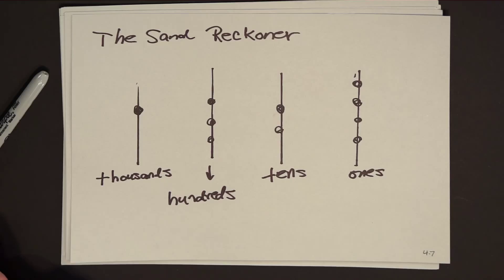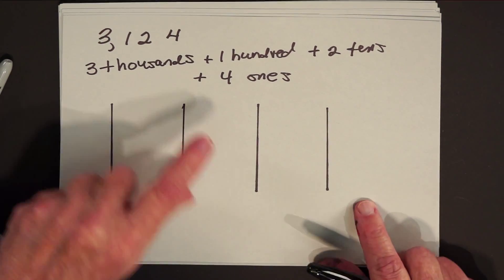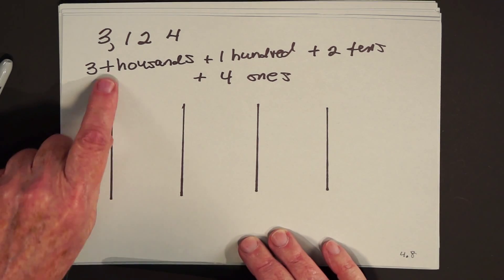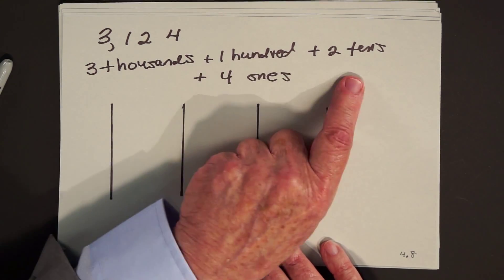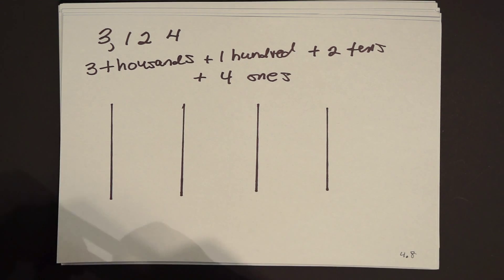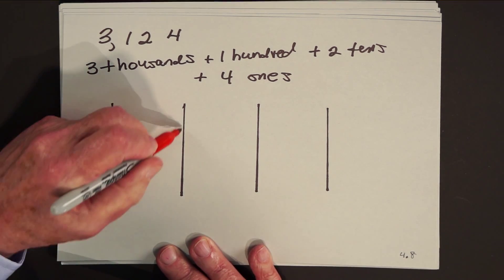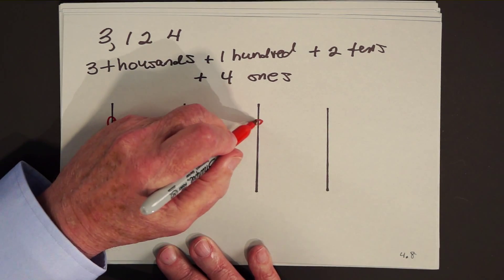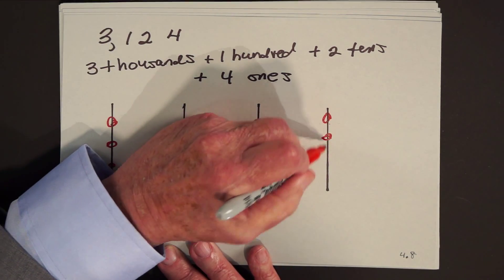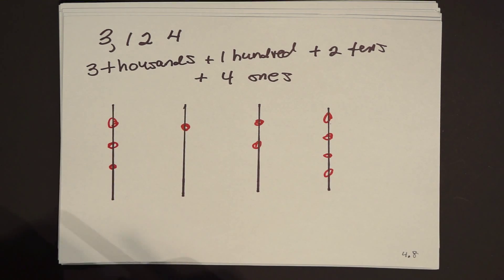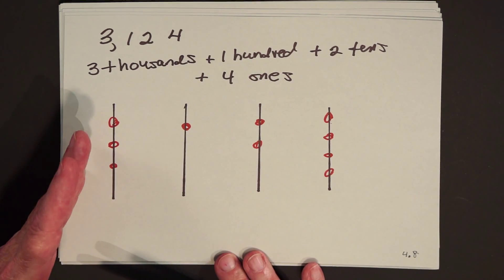So that's the sand reckoner. If I wanted to represent 3,124, that's what? Three thousands, one hundred, two tens, and four ones. So what would that mean? I would put three on the thousands line, one on the hundreds line, two on the tens line, and four on the ones line. And now every time I wanted a new denomination, I wouldn't have to make up a new symbol. I would just use another vertical line to the left of the ones I had already drawn.